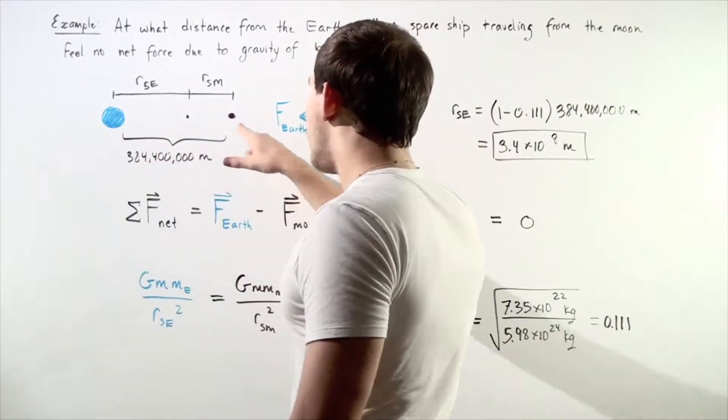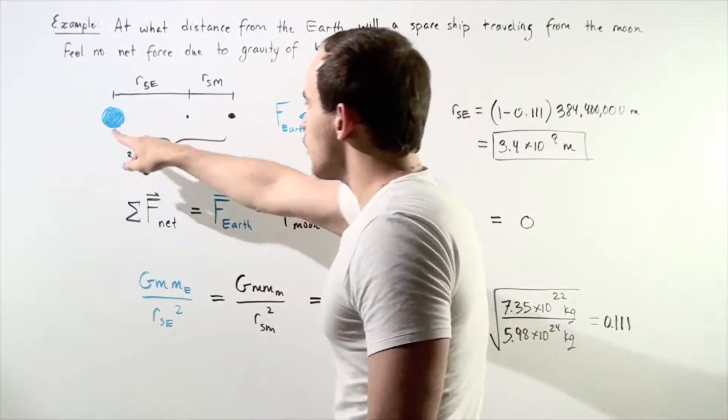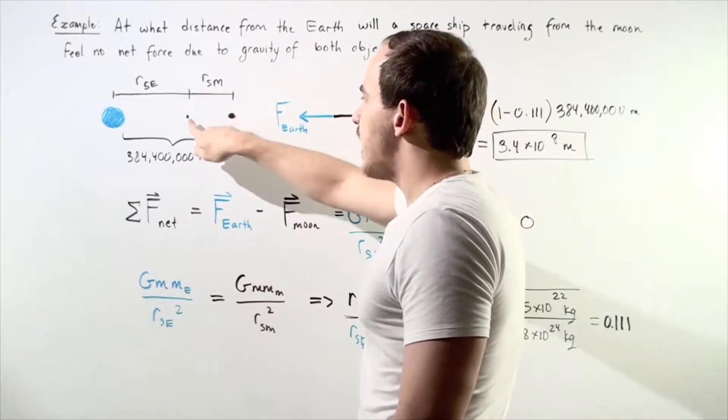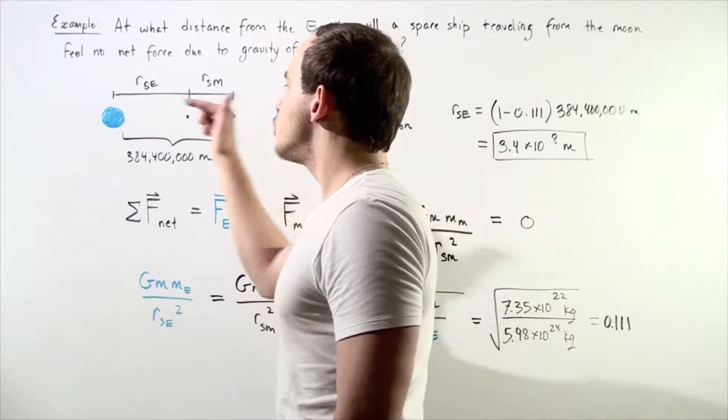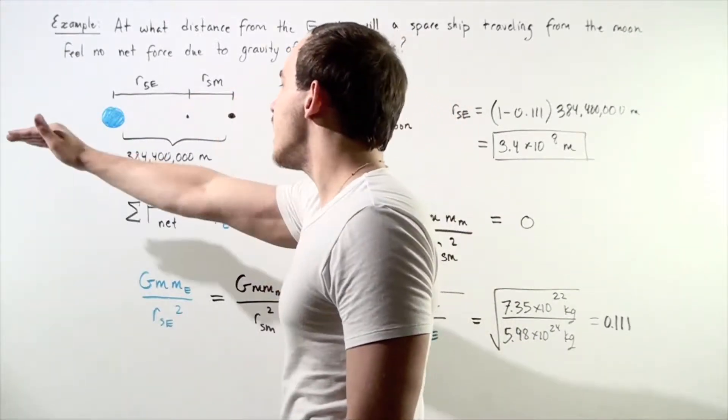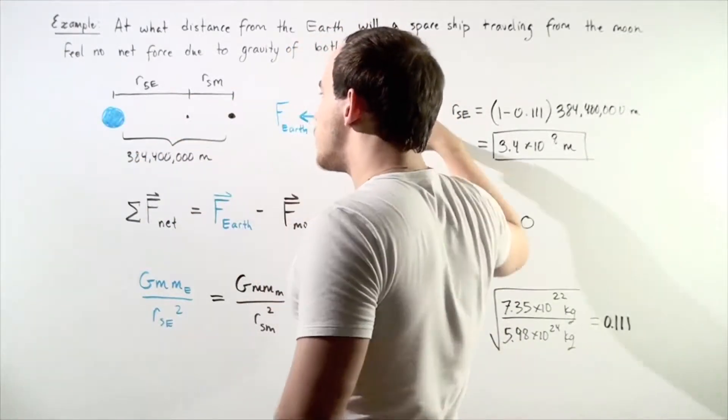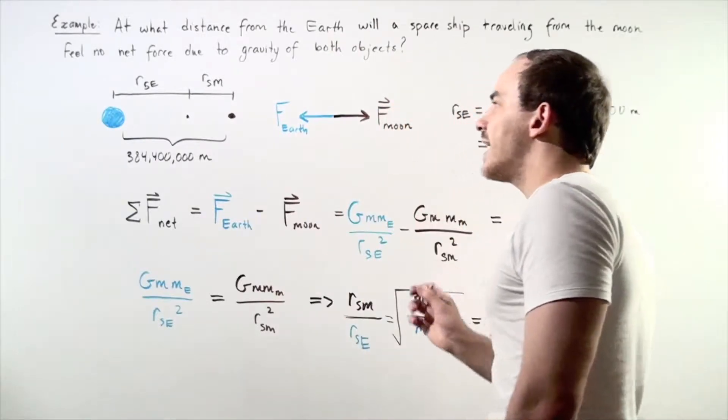Let's suppose we have the following diagram. We have the Earth, we have the Moon, and we have the following spaceship that is traveling directly from the Moon to the Earth along some horizontal. Let's say all these objects are on the same exact axis.